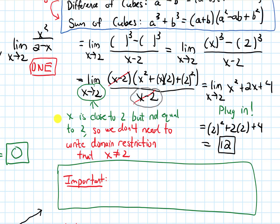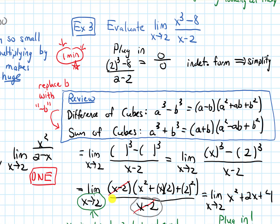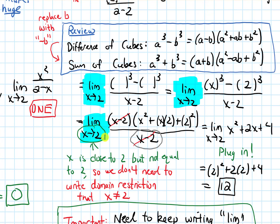An important notational point: when we evaluate limits and simplify through multiple steps, we need to keep writing the limit notation in front — 'limit as x approaches 2' — until we actually plug in. Once we plug in, we can stop writing it. If we don't write that limit in front, it means something different. So that's an important notational thing.